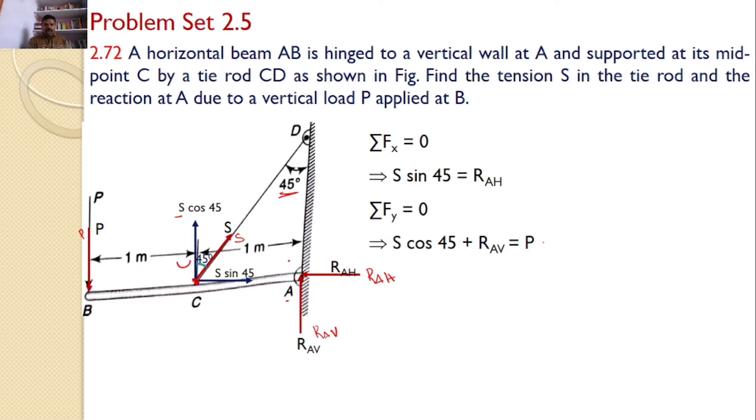Now, let us consider the third equilibrium condition: Sigma M about point A equals 0. RAH and RAV, these two forces are passing through point A. Hence, these two will not introduce any moment. S sin 45 force is also passing through point A, so it will not introduce any moment. Only two forces will introduce the moment: S cos 45 and P.